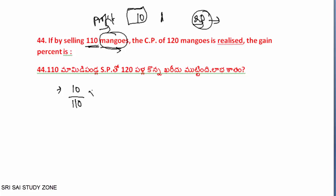It is 10 by 1 times 100. So we have 100 divided by 11, which is 9 and 1 by 11 percent. We have to find the profit.